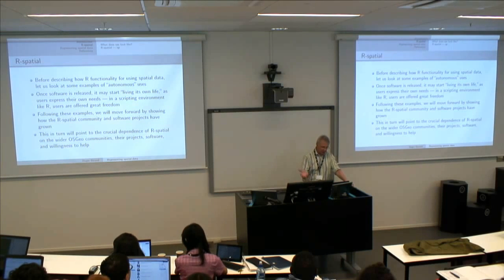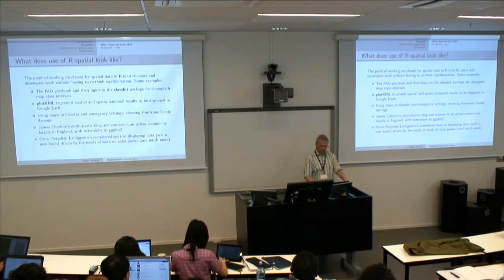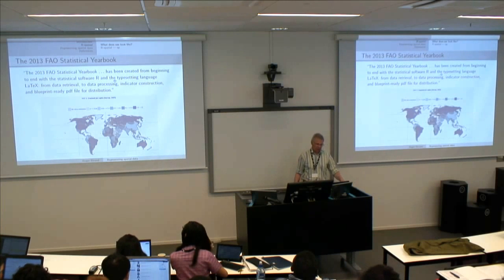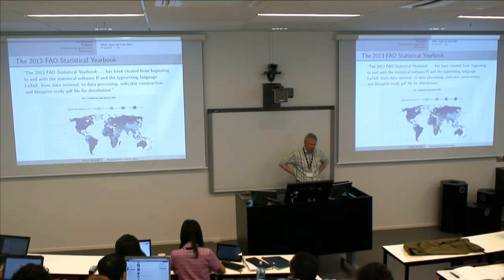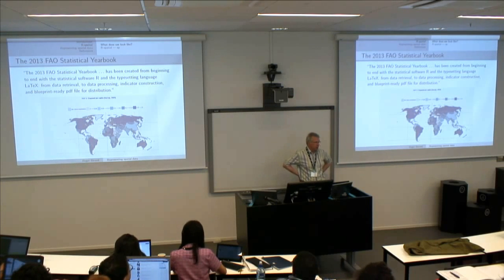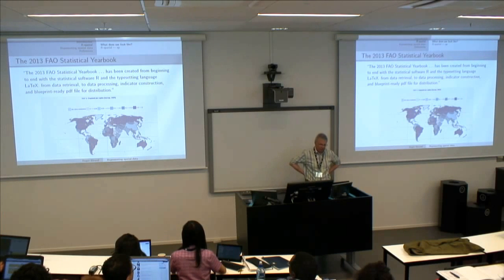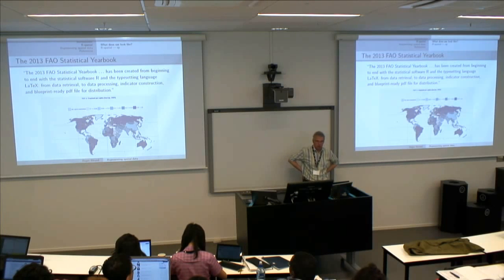I'll give you these examples and then move on systematically to show how the R spatial community has developed, and then look at the actual principles. In 2011, the Food and Agriculture Organization of the United Nations converted its statistical yearbook to automatic production using R and LaTeX, and R spatial was involved in the creation of the maps. There are quite a lot of tables made in R and formatted in LaTeX, and the maps are made with the standard R spatial tools.